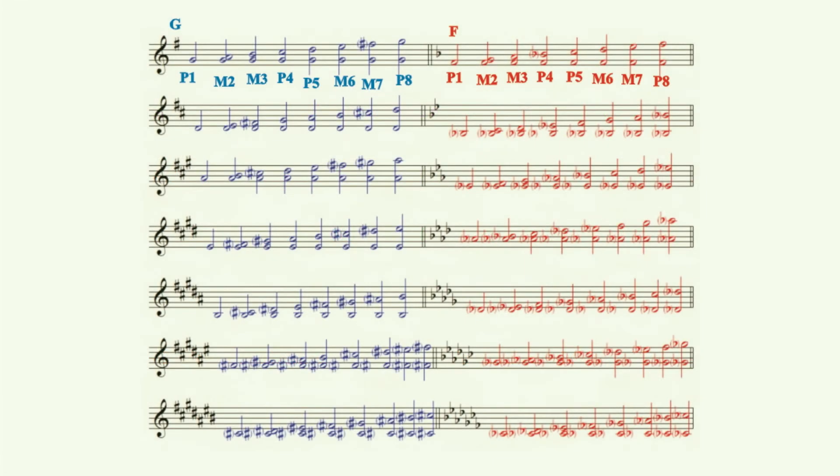Here, we see this same diatonic pattern—perfect unison, major 2nd, major 3rd, perfect 4th, perfect 5th, major 6th, major 7th, and perfect octave—is repeated in every major key. This is due to the function of the key signature making sure that the whole step half step pattern of the scale remains consistent regardless of the starting note. We can use the key signature in the construction of intervals to provide us with a known starting point from which to modify the quality to that desired.